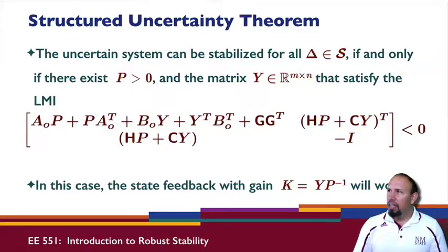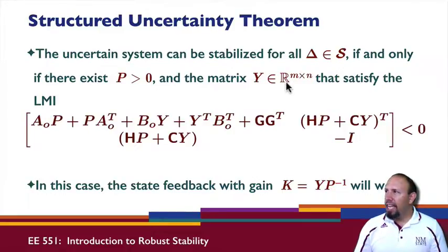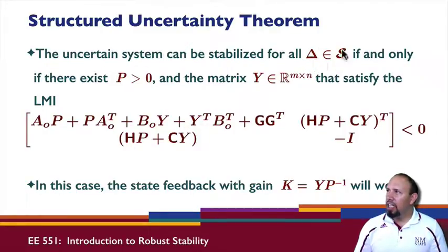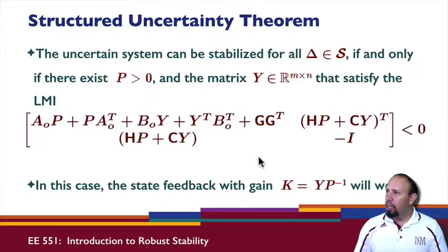The uncertain structured uncertainty theorem states: the uncertain system can be stabilized for all delta in the uncertainty set if and only if there exists a positive definite P and a matrix Y satisfying a linear matrix inequality. Both P and Y appear in this inequality. The state feedback gain K given by a specific formula will work. This is an if-and-only-if condition.